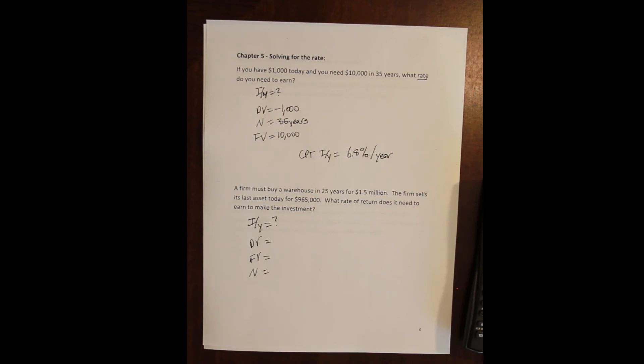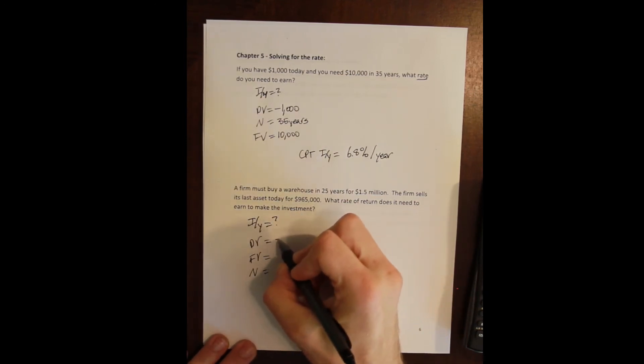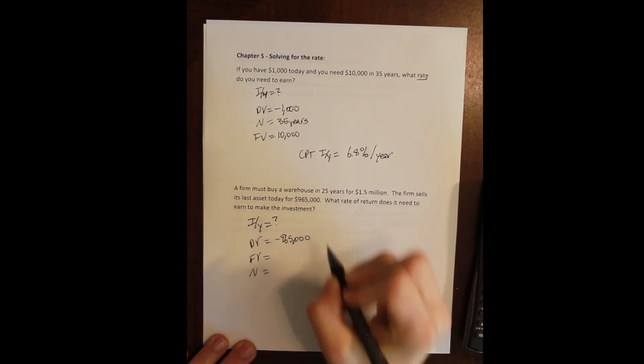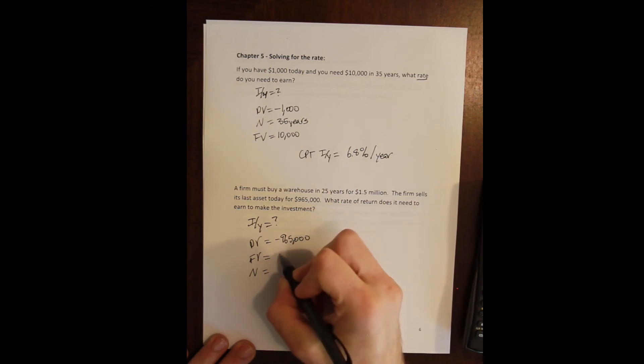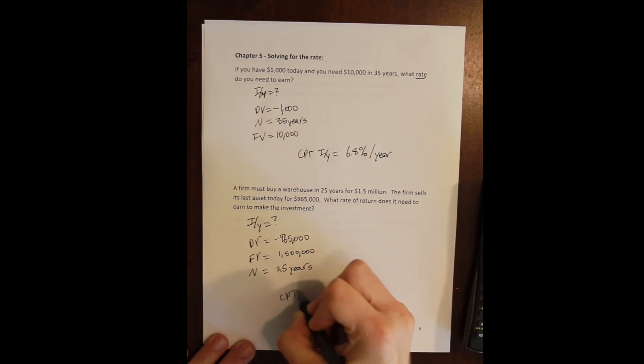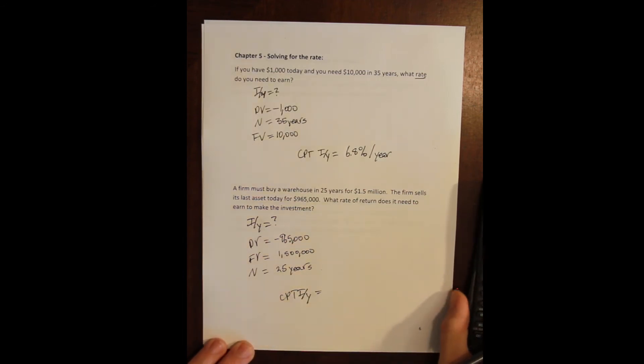As long as you are consistent with your inflow and outflow, it doesn't matter which one you use. So I will use the investment account here. So I'm going to invest $965,000 that I get from selling my last asset. And then I will receive from the closing of the investment account 25 years from now, I'll receive $1.5 million. And I will leave it in the account for 25 years and compute my rate that I have to earn for this to happen.